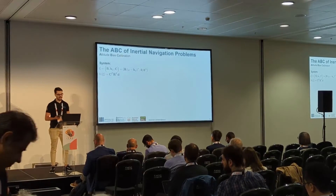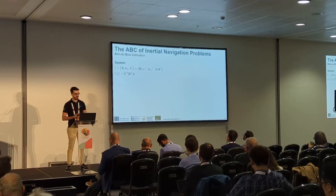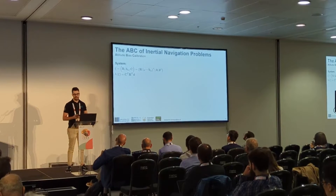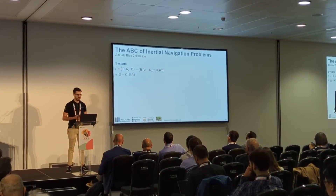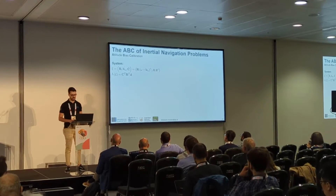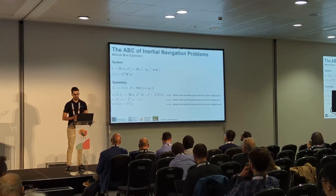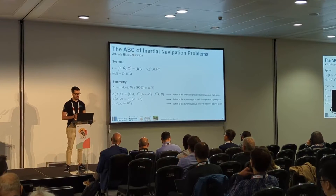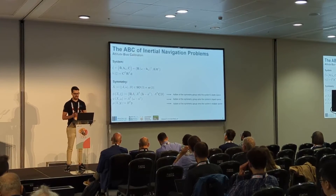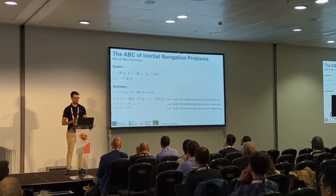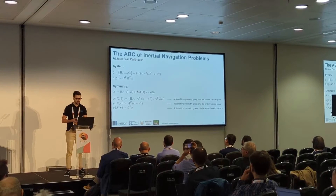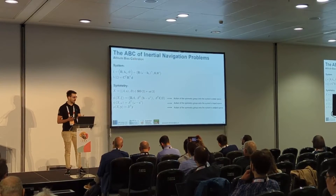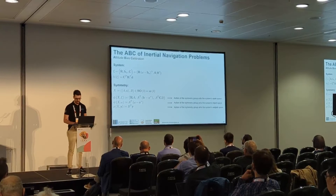We have our system. R represents the attitude of a rigid body. B_omega represents the gyroscope bias, and C is the calibration state of a sensor that measures a direction — let it be a magnetometer, a sun sensor, a star tracker, a camera looking at a fixed landmark, or anything that measures a direction. We then need to define a symmetry, which is the fundamental block the equivariant filter builds upon. In this case the symmetry is a Lie group — the cotangent bundle group of SO3 — which acts on the system via an action phi, and eventually also acts on the inputs via an action psi, and on the output direction measurement via an action rho, as shown on the slides.